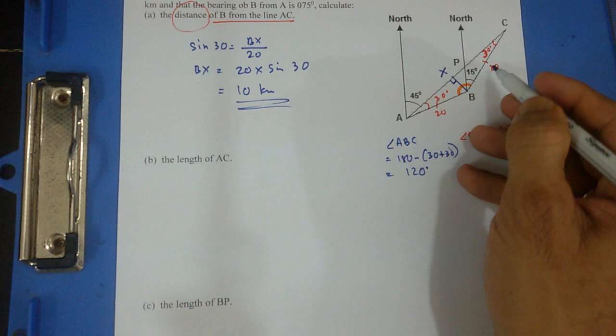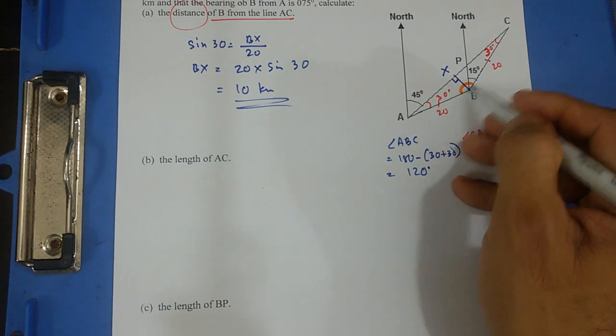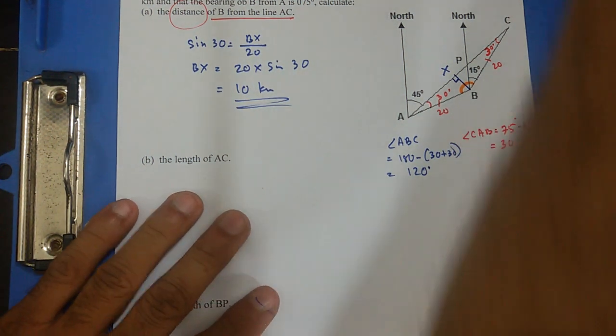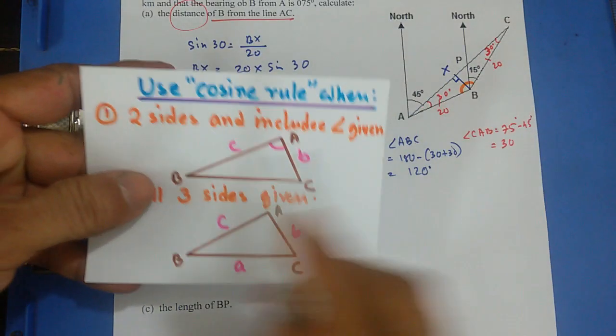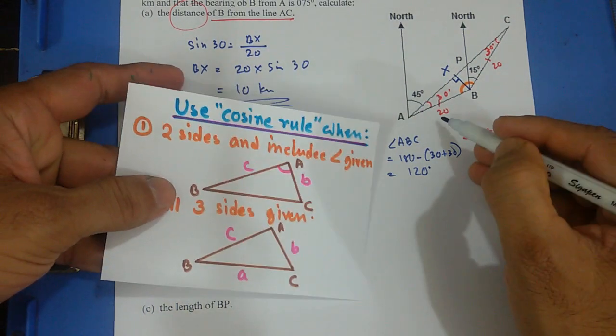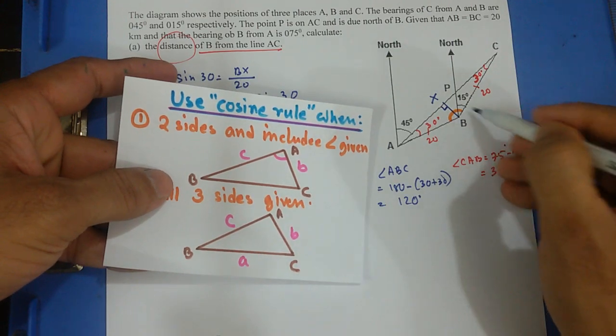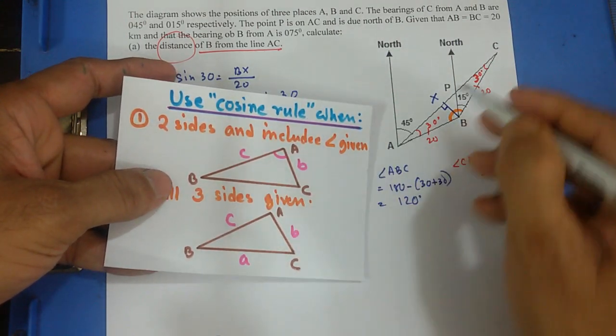So when I have two sides and included angle, I can use cosine rule. I hope you remember that. Cosine rule is when I have two sides and included angle. These two sides and included angle is 120. I can use cosine rule to get that.